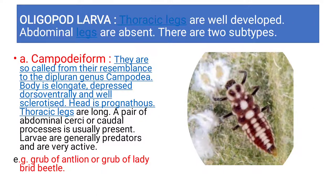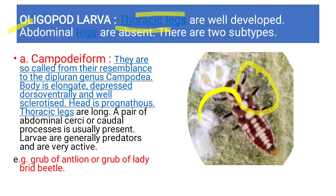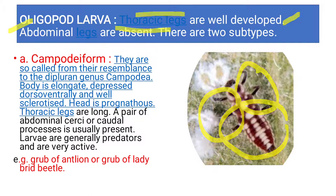Now let us come to the third type of larva: the oligopod larva. As the name 'oligo' suggests, here appendages are present — specifically thoracic legs. You can see three pairs of legs on the thoracic region: fore leg, mid leg, and hind leg. Abdominal legs are absent. Oligopod larvae are of different types.